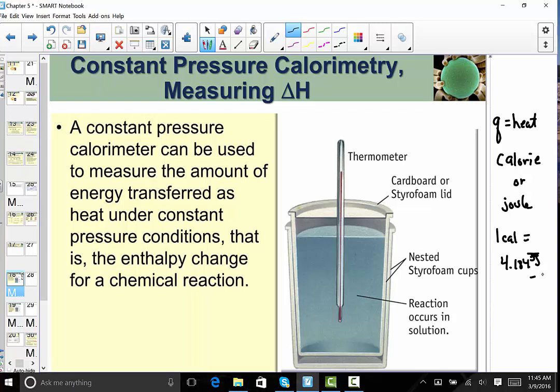An instrument we often use in the laboratory is called a calorimeter. A foam cup calorimeter is used to measure the amount of energy transferred as heat under constant pressure conditions, in the enthalpy change for a chemical reaction, or it could simply be a physical process as well, as transferring heat from a hot object to a cold object.